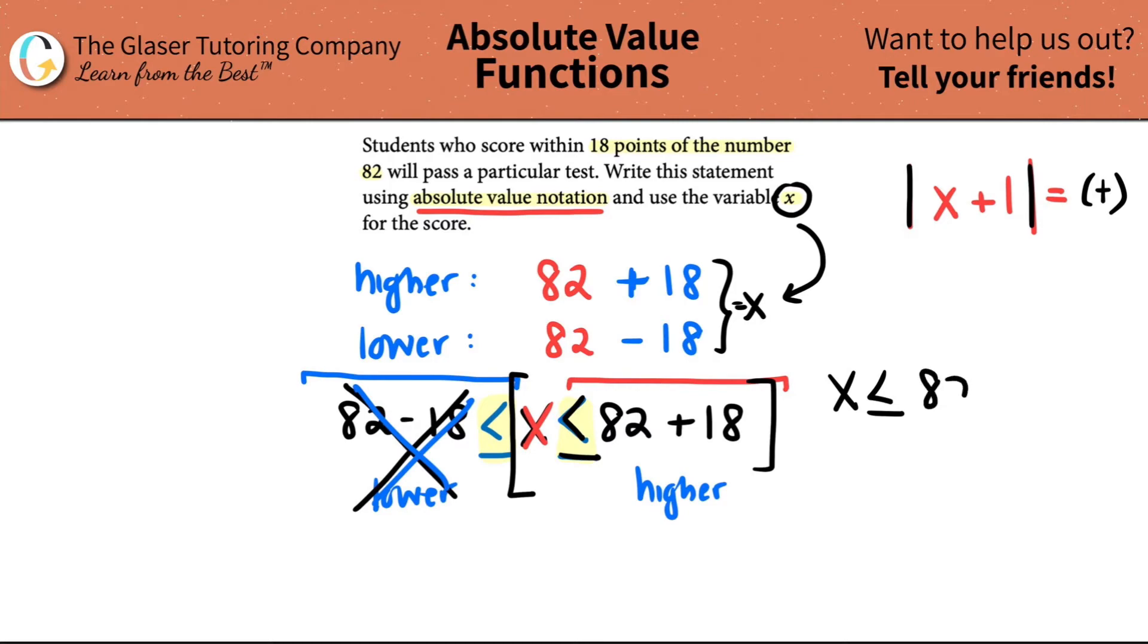So I'm just going to write that out: x is greater than or equal to 82 plus 18. Now I just want to put it into absolute value notation.